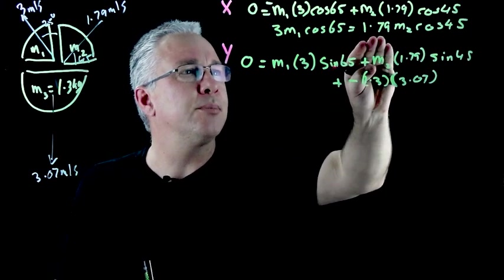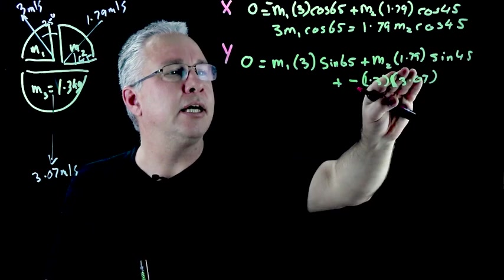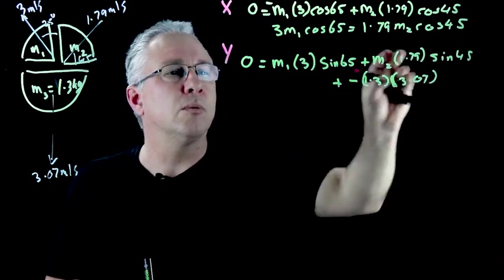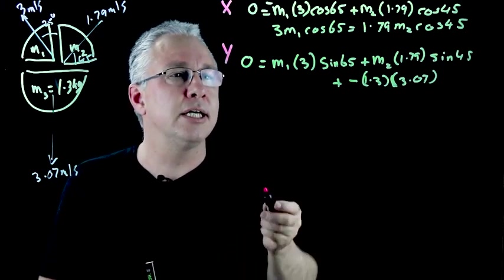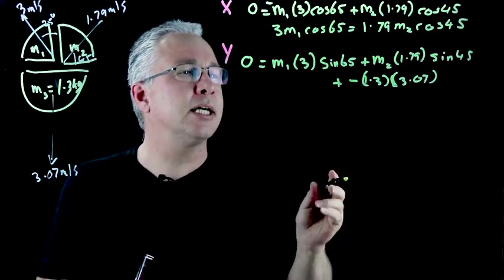You'll see I have here 1.79 m2 cosine 45 and over here I have m2 1.79 sine 45. Well they happen to be exactly the same thing because the sine of 45 is equal to the cosine of 45. So what I can do is I can clean this up.